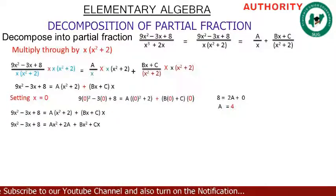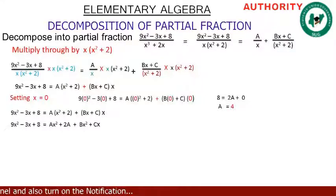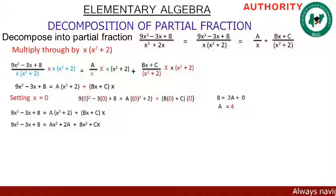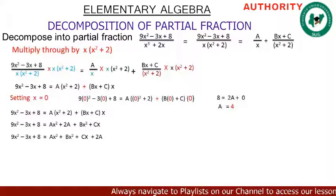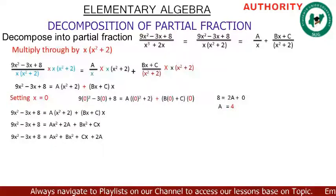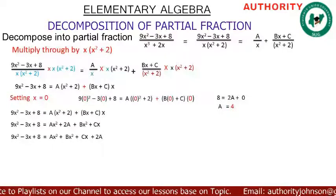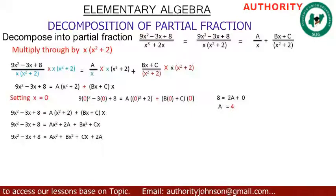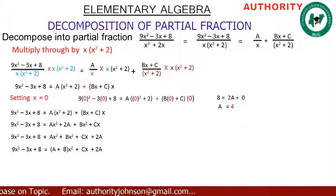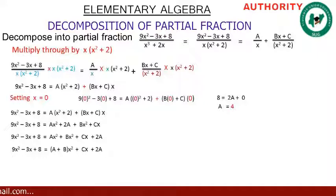Expanding: 9x² - 3x + 8 = Ax² + 2A + Bx² + Cx. Collecting by degree: 9x² - 3x + 8 = (A + B)x² + Cx + 2A.